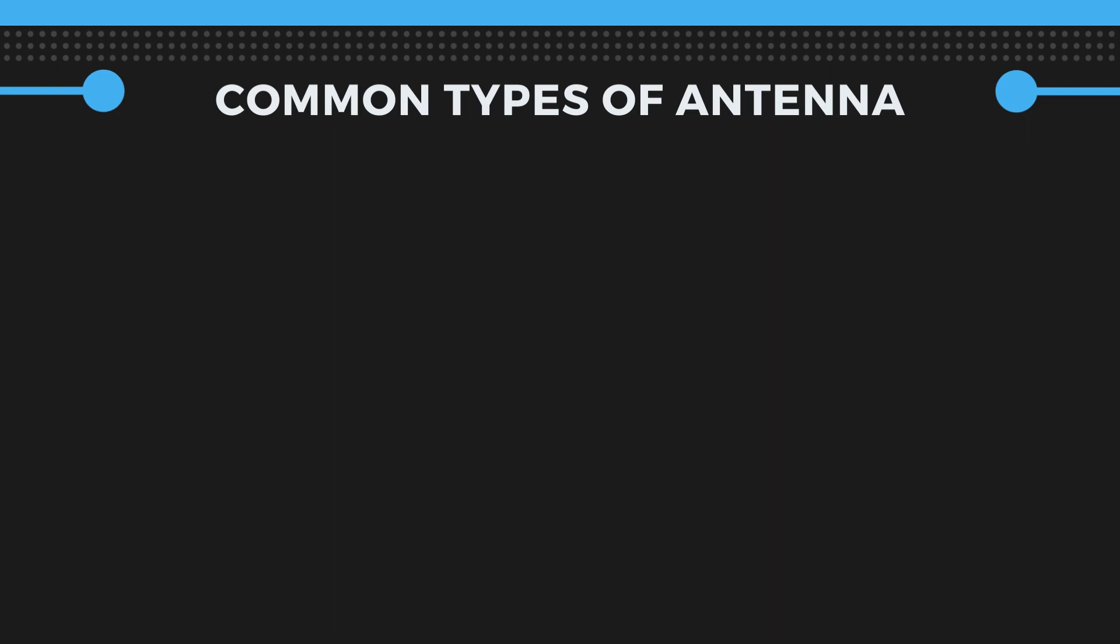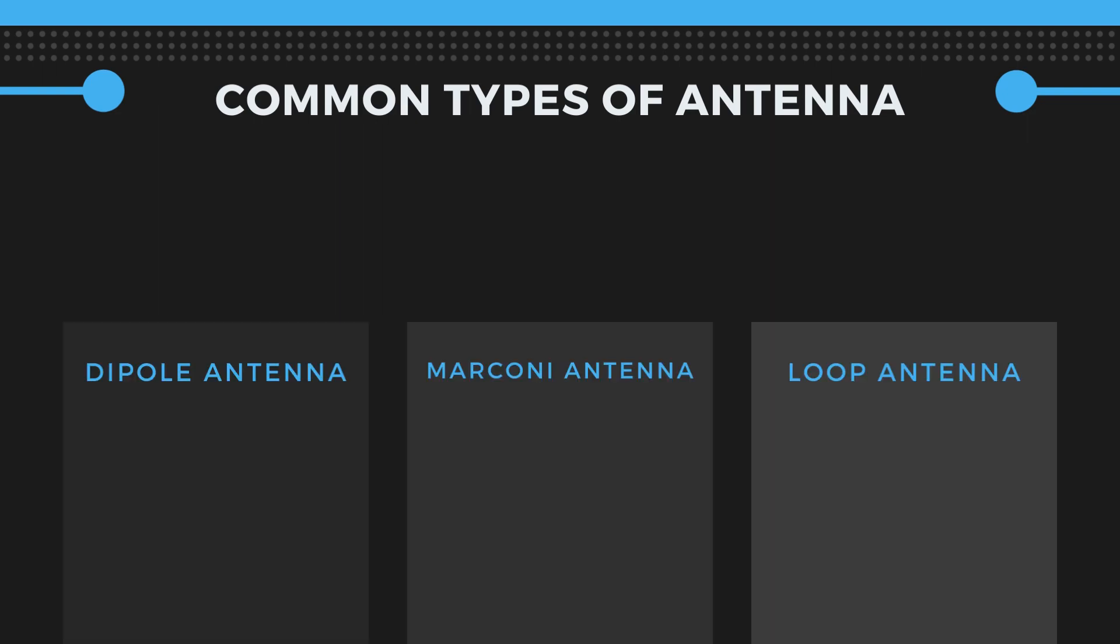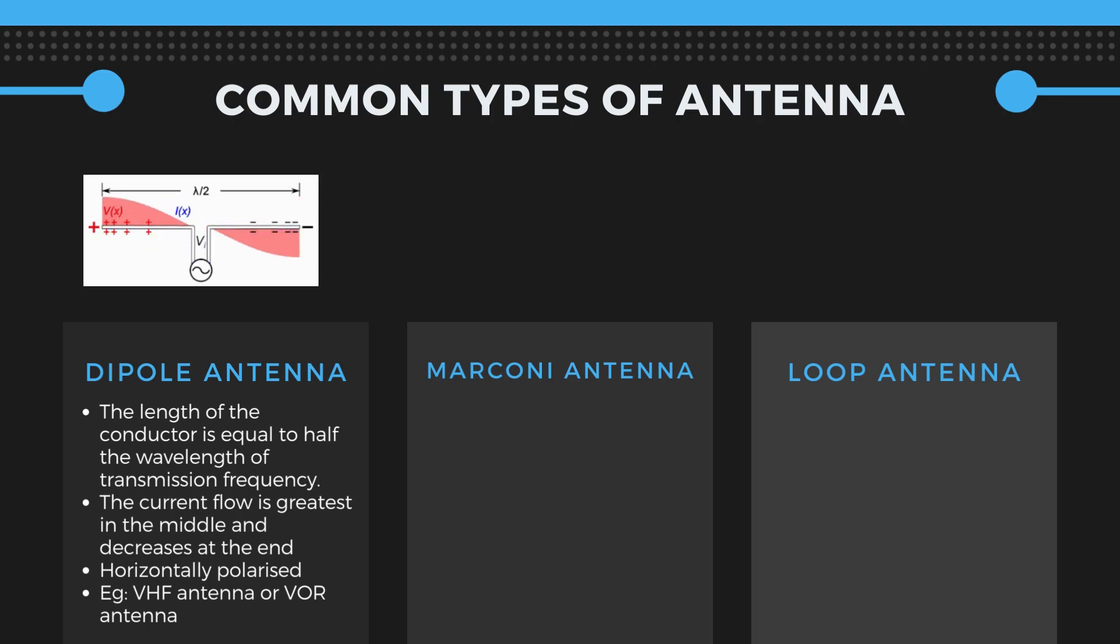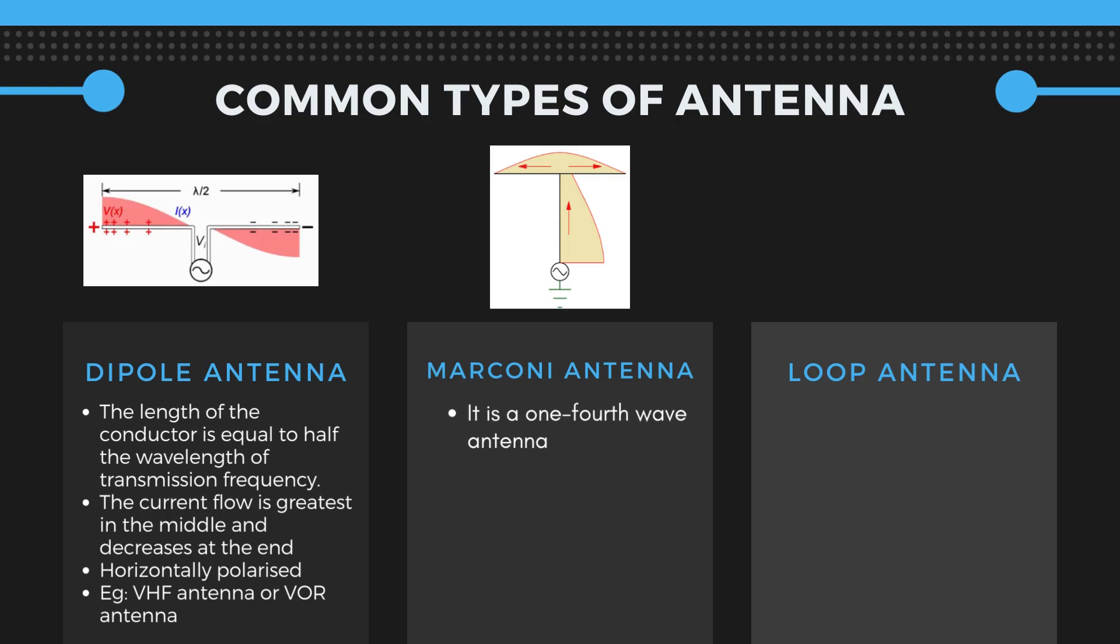Now I will conclude this lecture by discussing the types of antennas used in aviation. The most common three types of antennas used are dipole antenna, marconi antenna and loop antenna. In a dipole antenna the length of the conductor is equal to half the wavelength of its transmission frequency. The alternating transmission current is fed at the centre and as the current alternates, current flow is greatest in the middle and decreases at the end. They are horizontally polarized for example a V-shaped VHF antenna or VOR antenna. A marconi antenna is a one-fourth wave antenna which achieves the efficiency of half wave by using the mounting surface of the conducted aircraft skin to create the second one-fourth wavelength. They are vertically polarized and create a field in one direction.